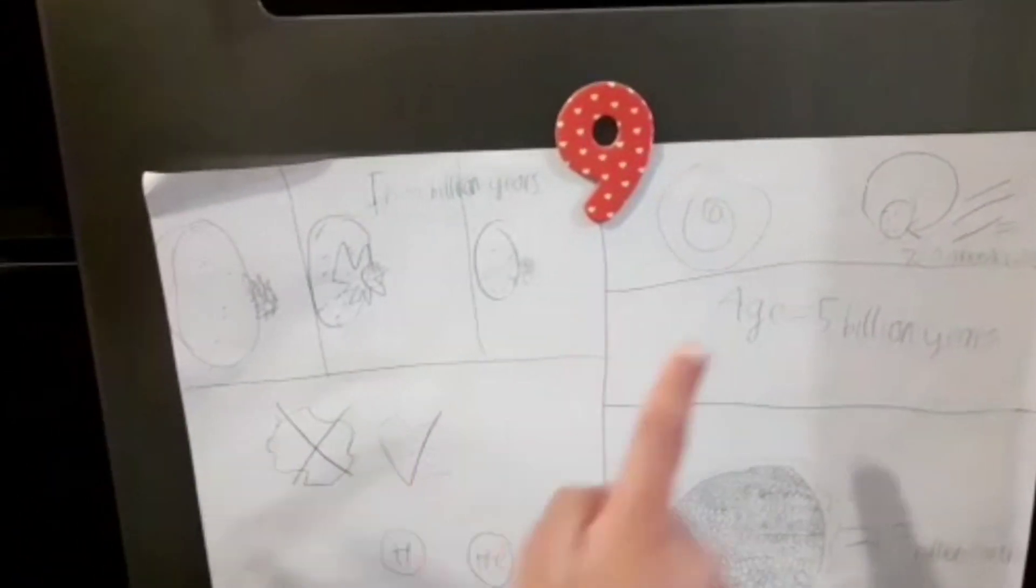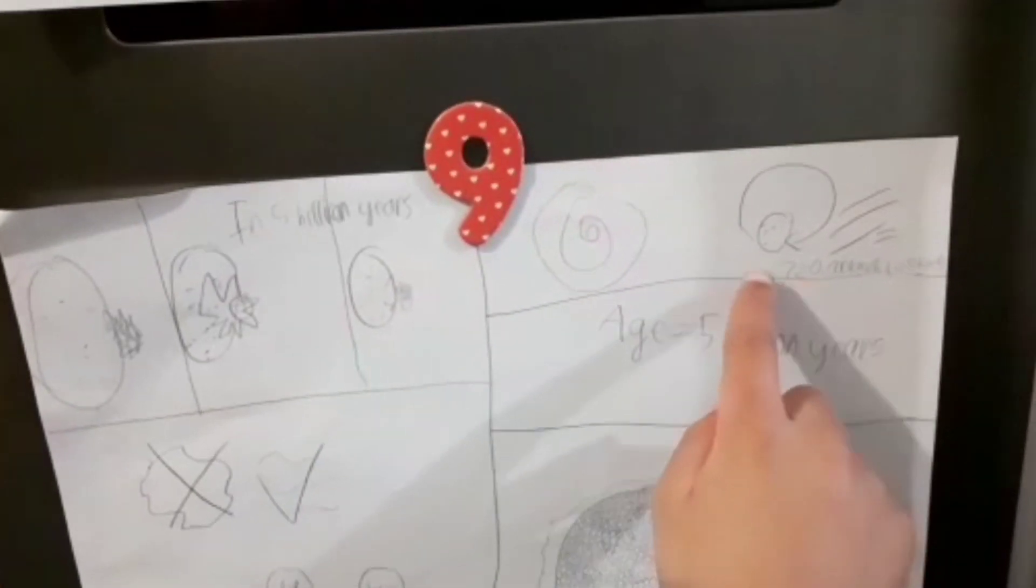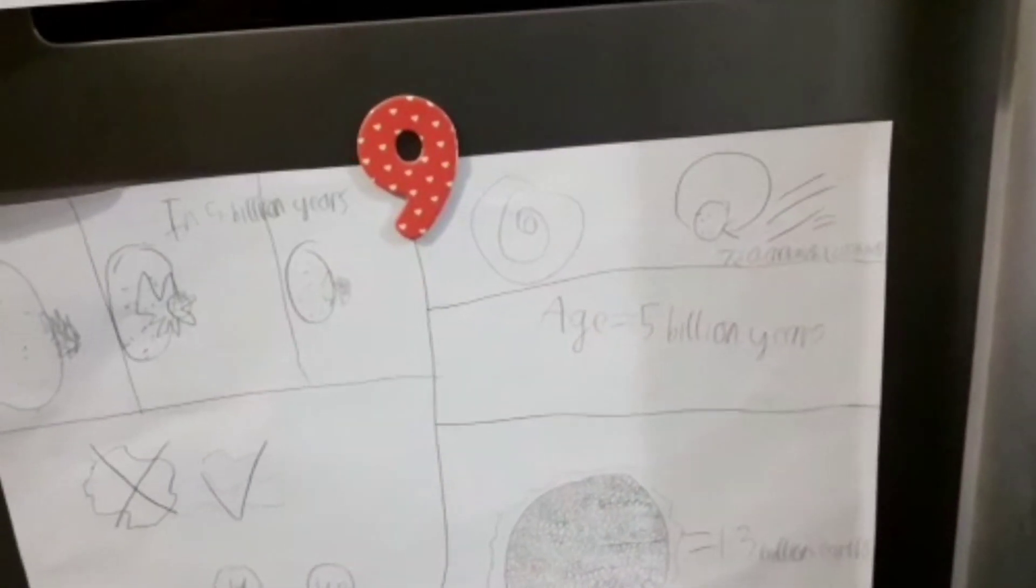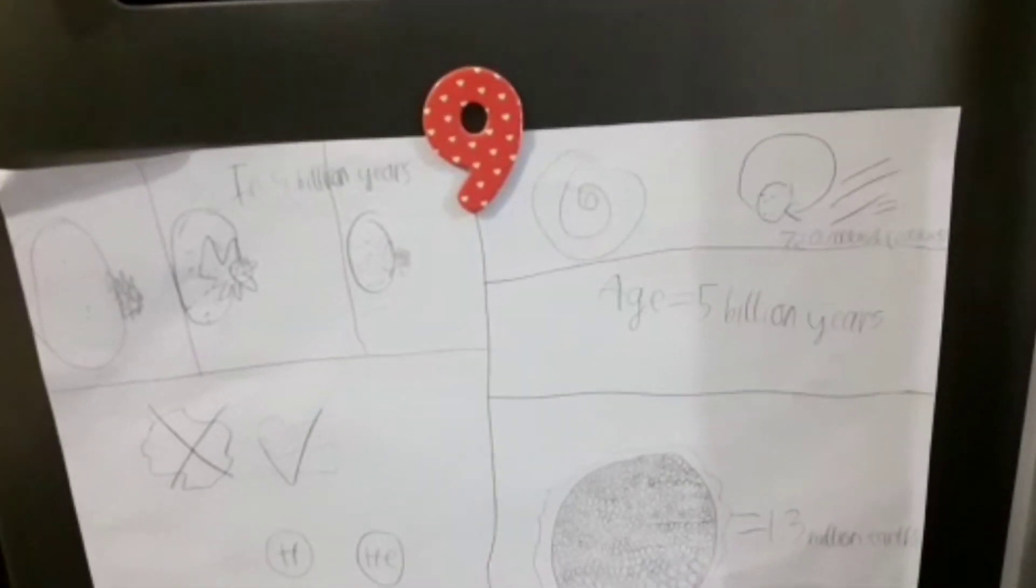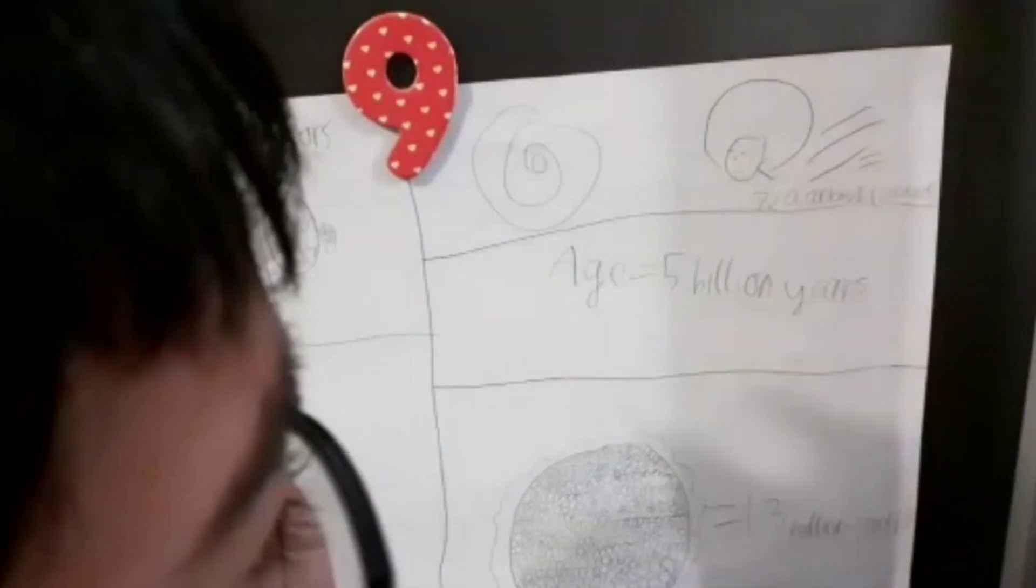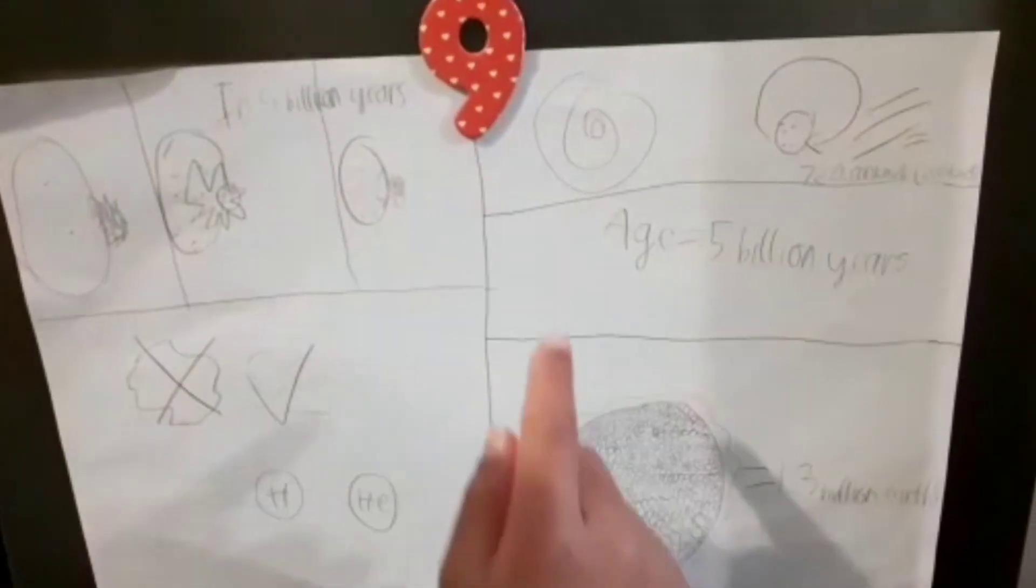The Sun's orbital speed around the Milky Way galaxy is 720,000 kilometers per hour, or 200 kilometers per second.